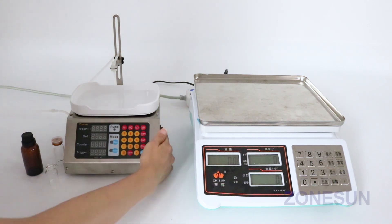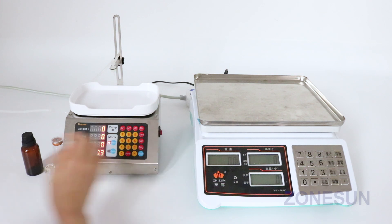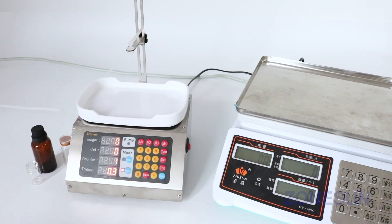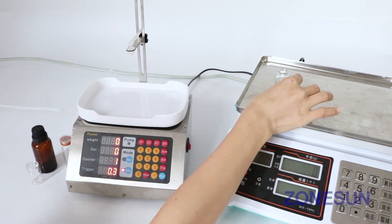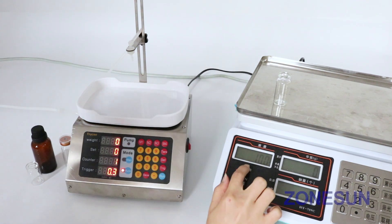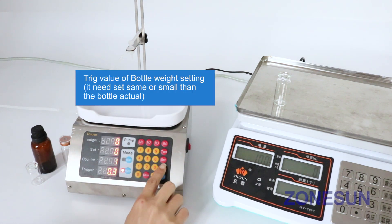Now open the machine. Now, we test the smaller bottle. Weight is 10. The target weight sets 10.